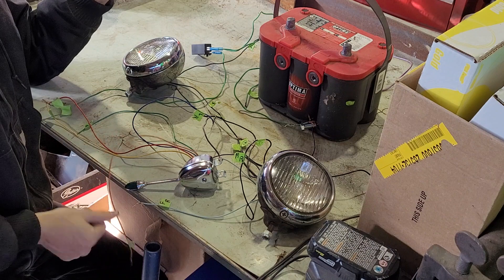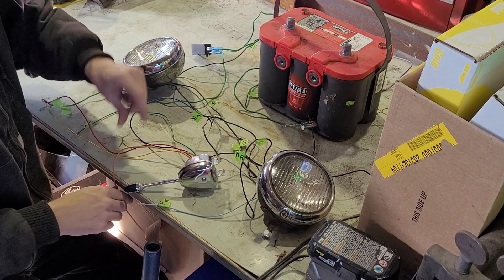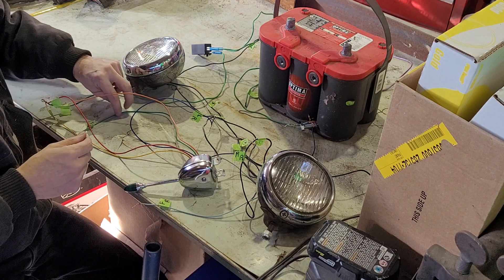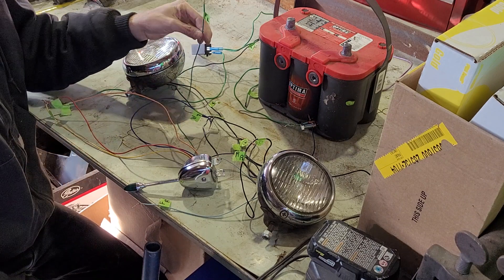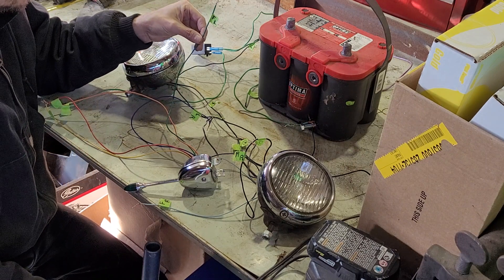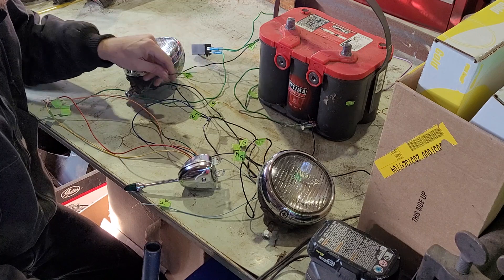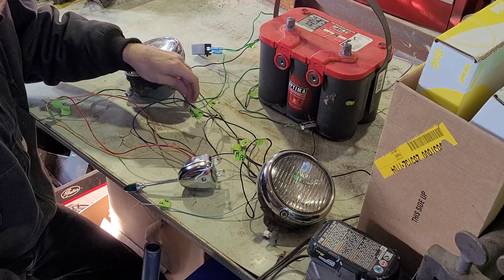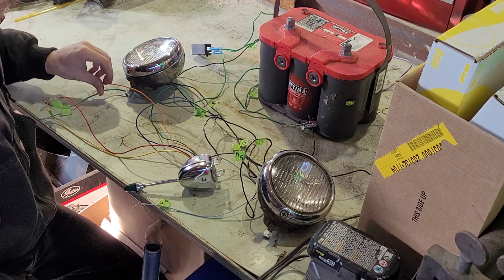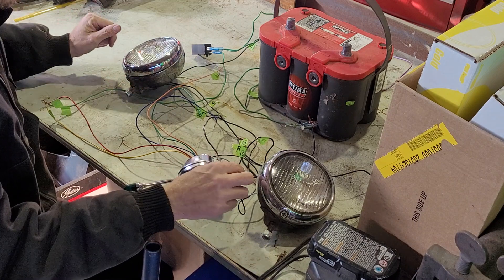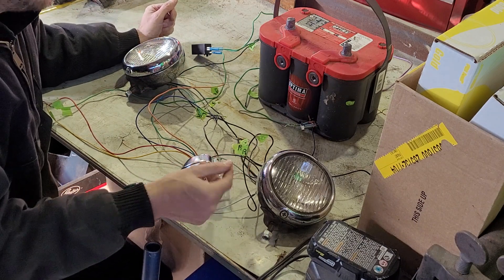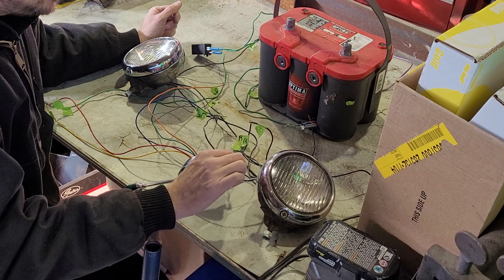You got the orange wire here, that one goes to your brake switch and that's to make the four-way hazards work. You have a green wire, that's your front left. You got your two left ones.